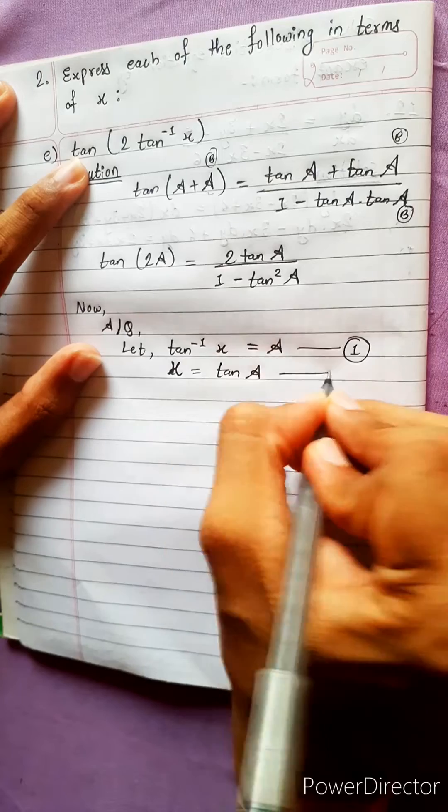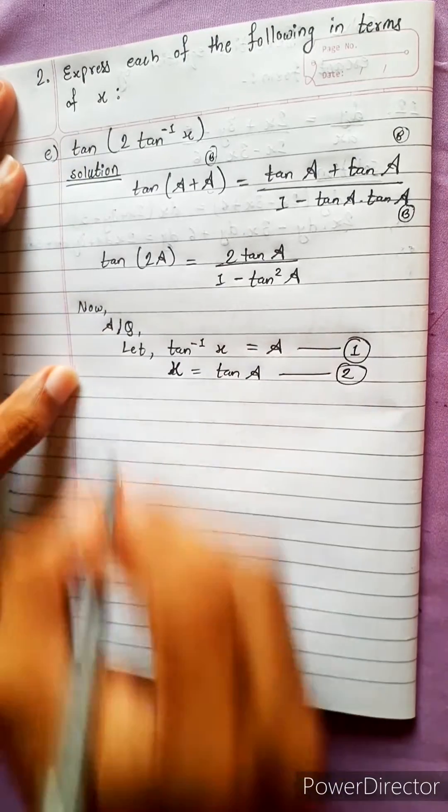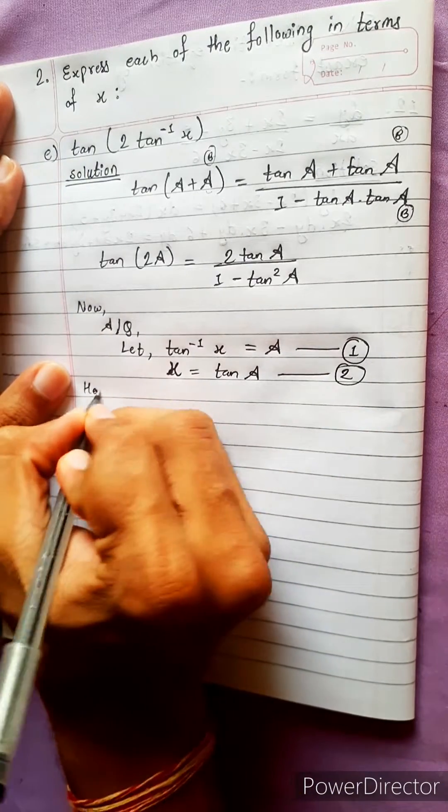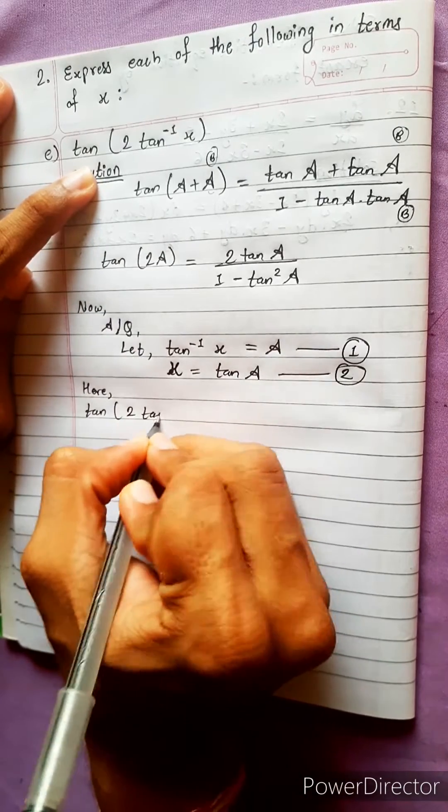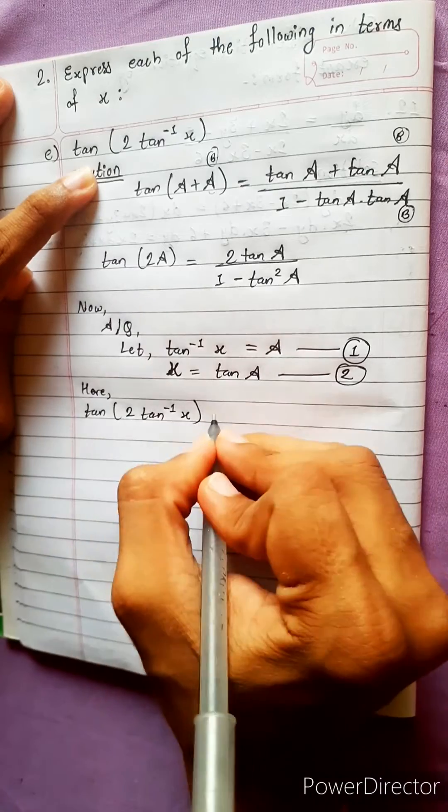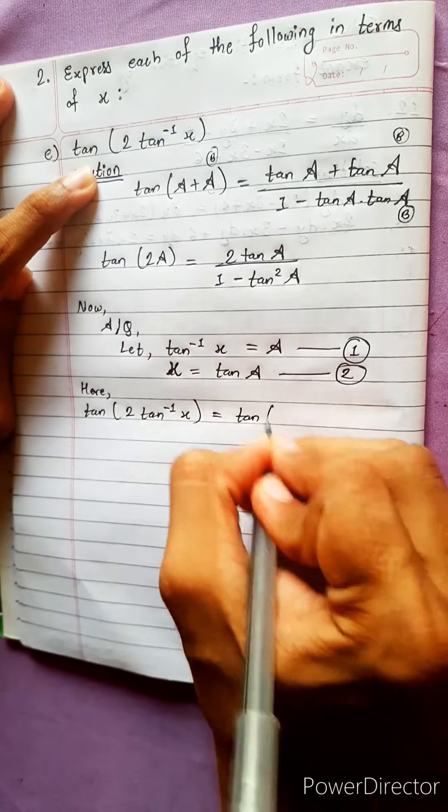Now, these two are the most important steps. We will need this while solving. Here, what is the question? tan, we have to copy the question as it is, 2 tan inverse x equals to tan 2A.